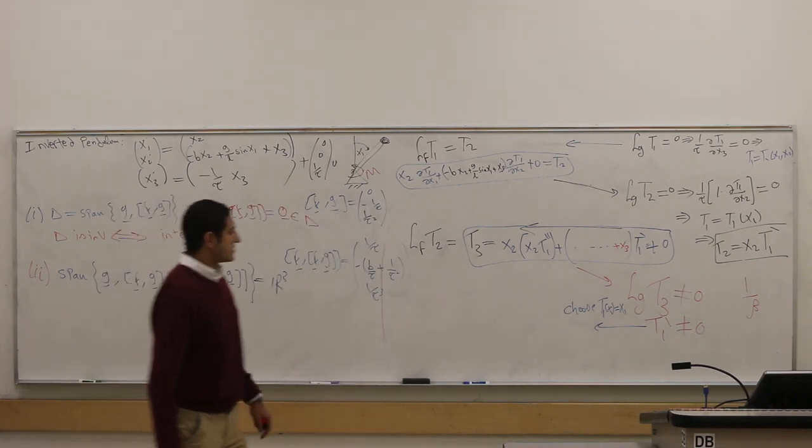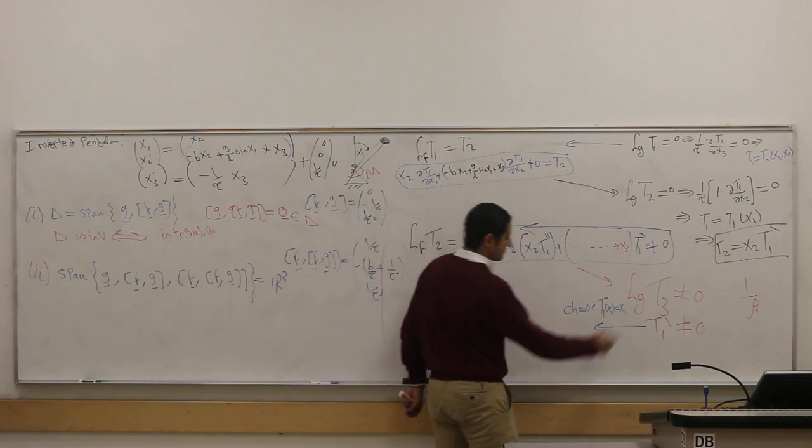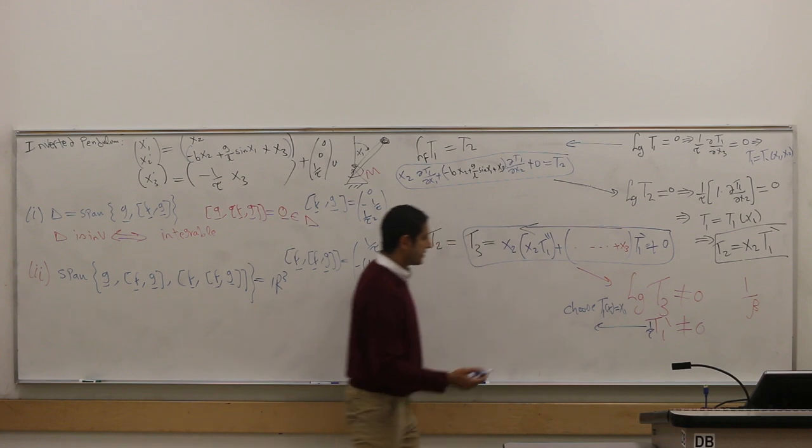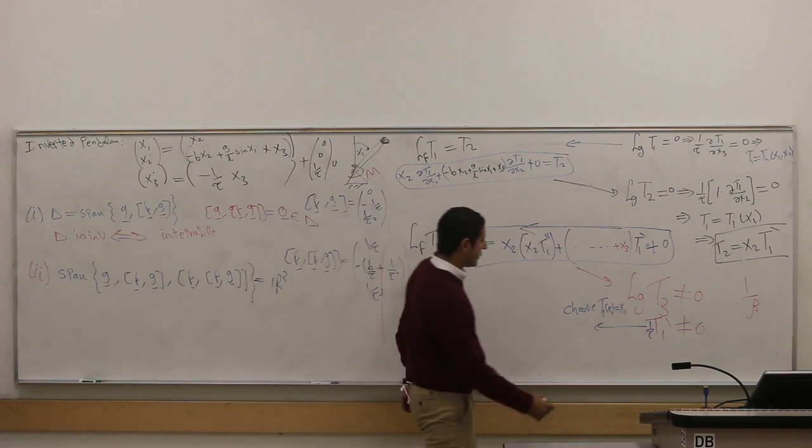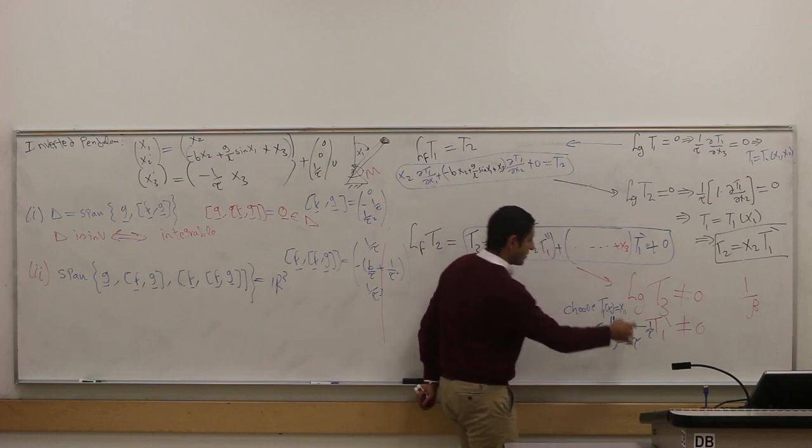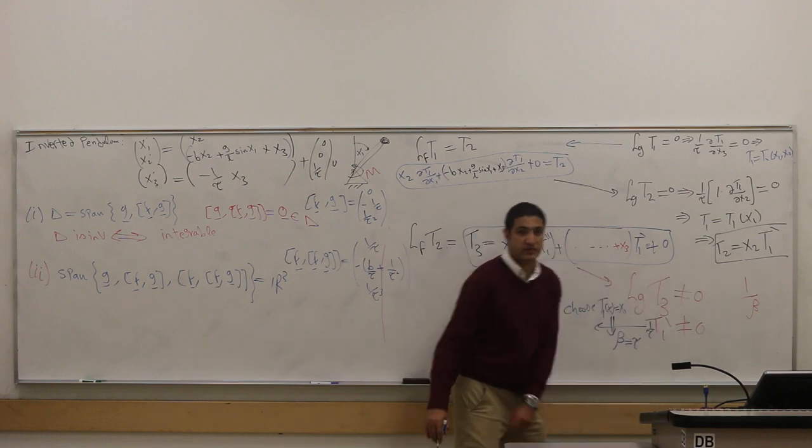And this will give me—this is 1 over tau, doesn't matter—so this will give me that beta is tau, because this guy is 1 over beta.